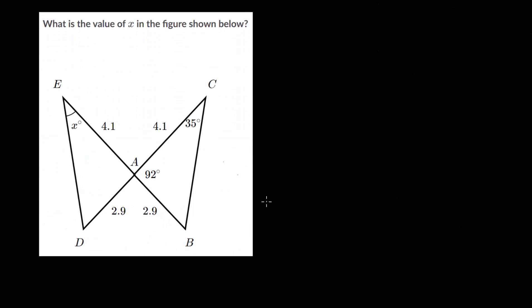In the final problem, we again have two triangles and need to see if they're congruent. They share a side length of 4.1 and a side length of 2.9. They also have two vertical angles, and since vertical angles are equal, angle EAD is also 92 degrees. From this, we can see we have side-angle-side for each triangle, which means they are congruent.